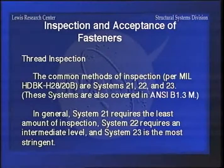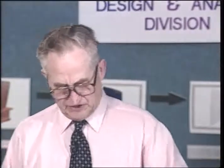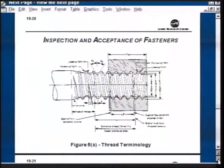In general, system 21 requires the least amount of inspection, system 22 is an intermediate amount, and 23 is the most stringent. Each one of these is practically a separate document, so I'll just try to summarize them. One of the things we found is that most people just use system 21, and on system 21 all you're doing is checking the OD or ID and using a go/no-go gauge.